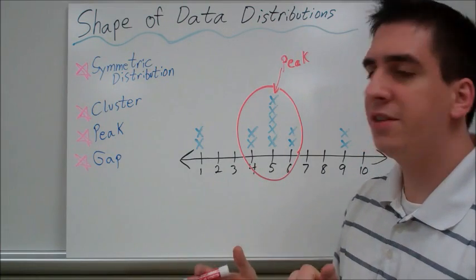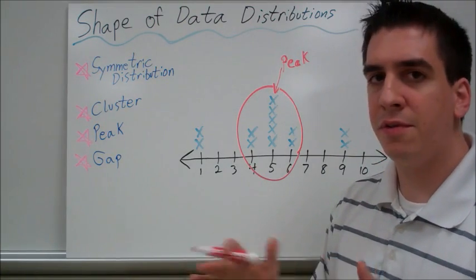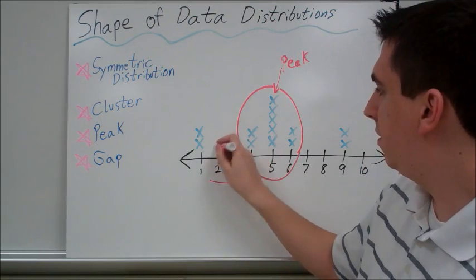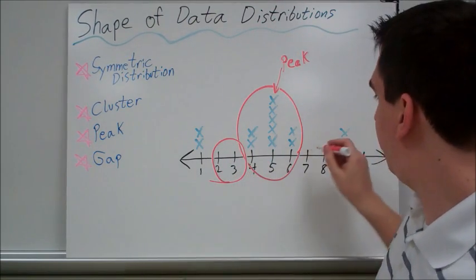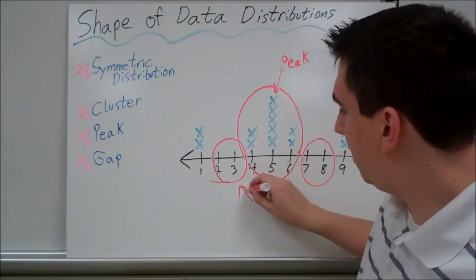And gaps, are there any parts in the graph where there's just no information, there's no data? From 2 to 3, there's a gap. And from 7 to 8.